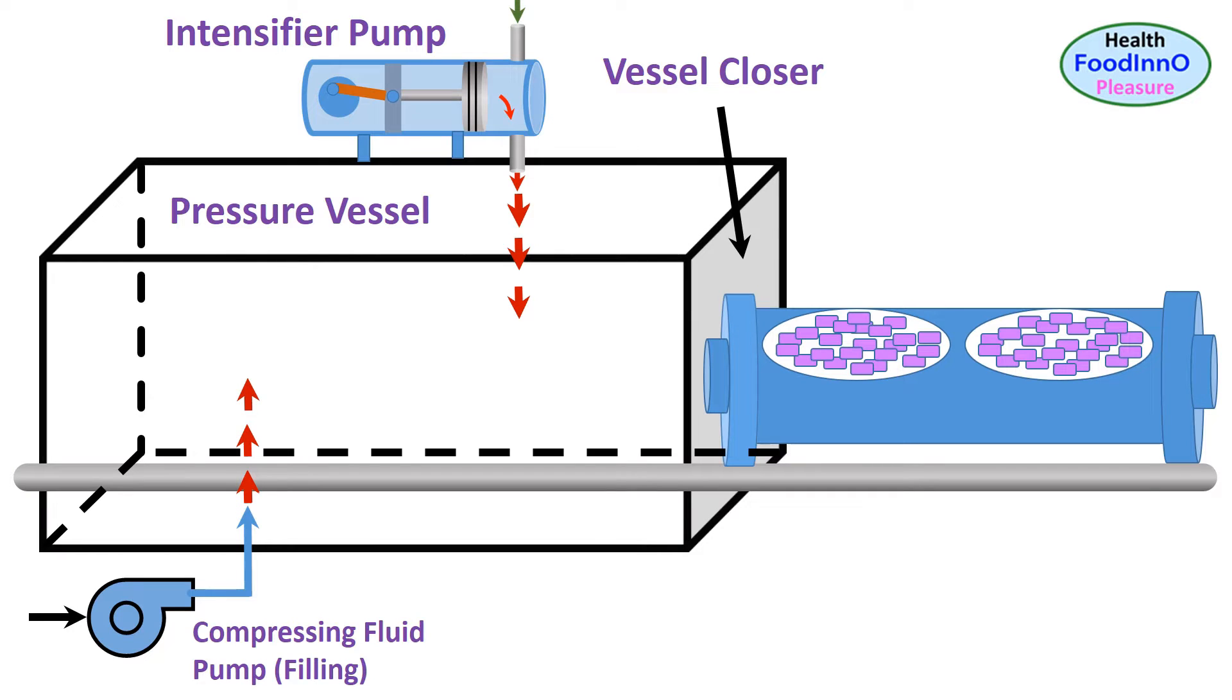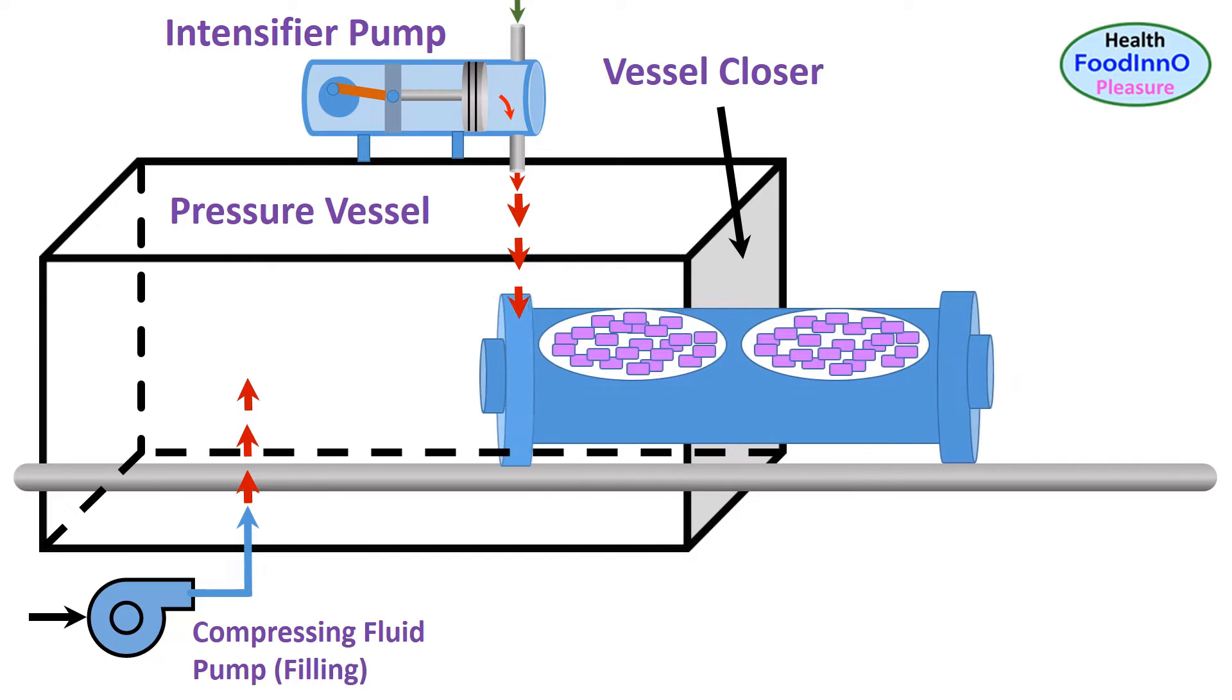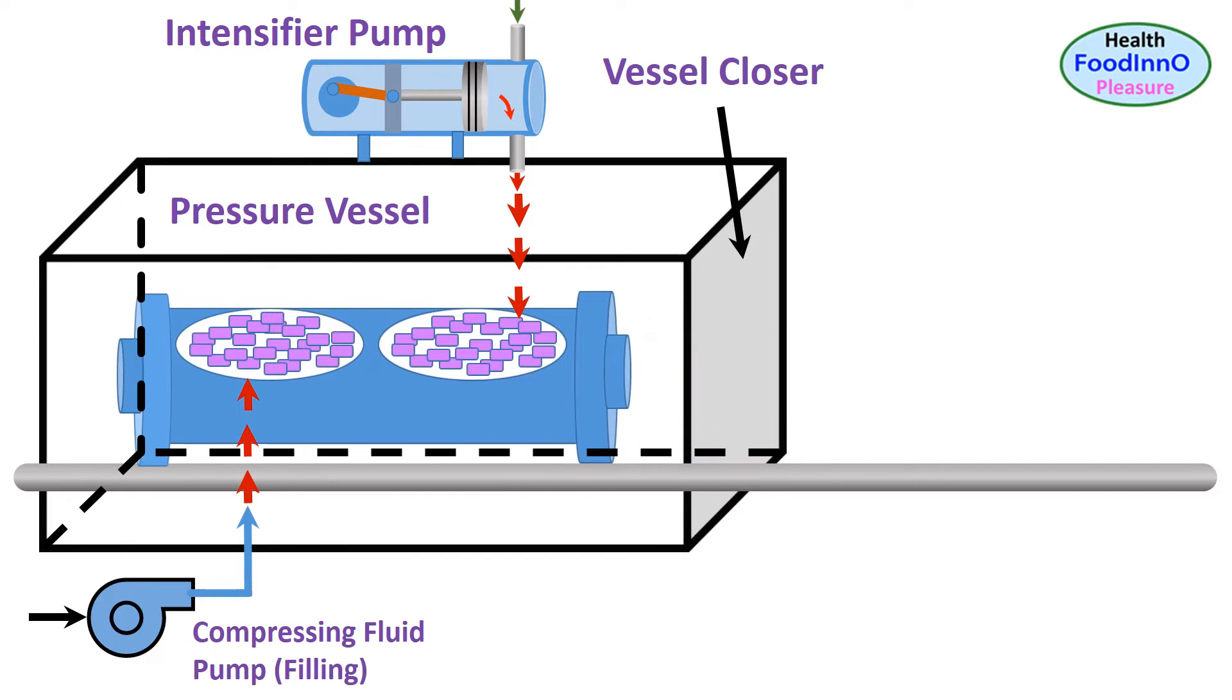We could visualize the high pressure processing operation. First, vacuum packed food in plastic pouches are filled in a perforated basket and then moved inside the pressure vessel. The pressure vessel is then closed and filled with compressing fluid. Then an intensifier pump is used to build the desired pressure in the vessel. After predetermined holding time, the compressing fluid is drained and the sample basket is then removed from the vessel.